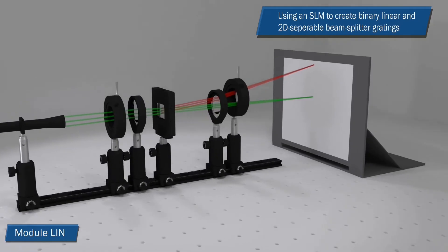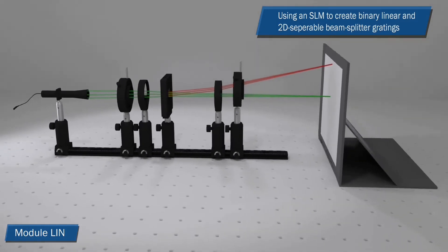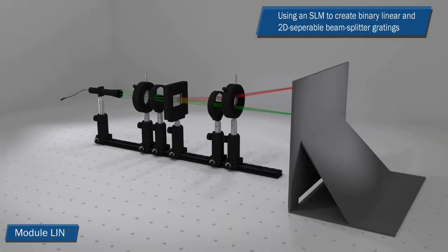In the LIN module, the SLM is used to create binary linear and 2D-separable beam splitter gratings.